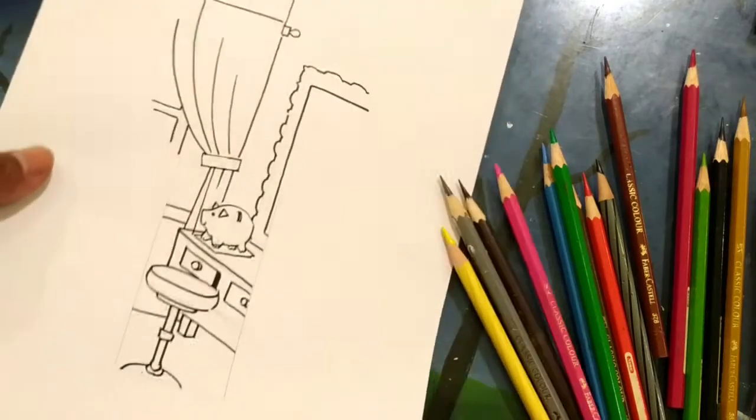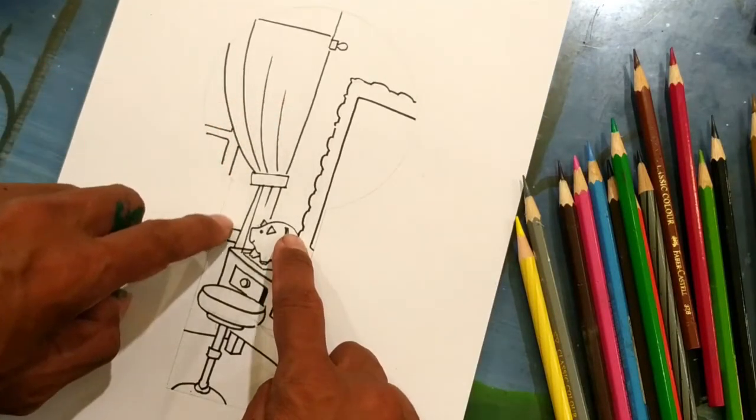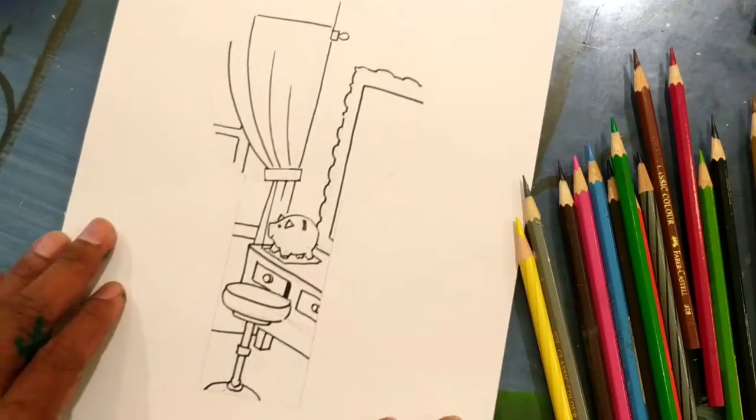All right. I traced mine already, as you can see. Look, the piggy bank is there. Here's the curtain and the windows. And I don't go over this line because that's the key line. The key.